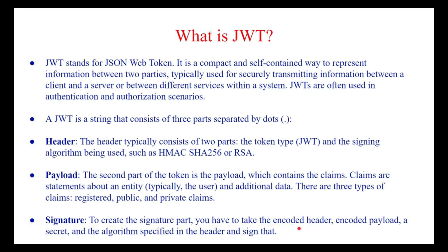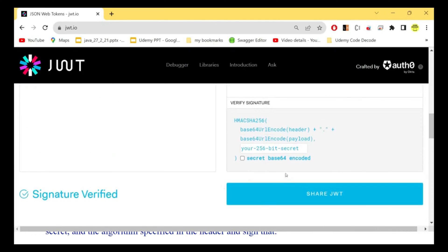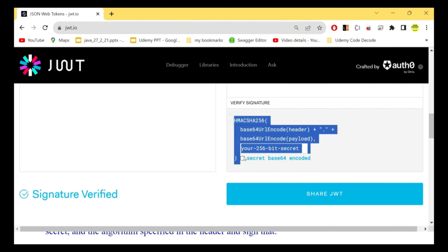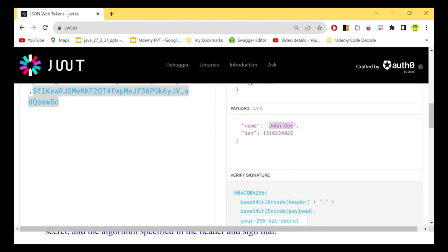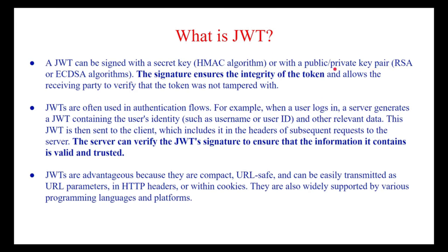There are three types of claims: registered, public, and private. The last part is the signature, which is created by taking the Base64-encoded header, the Base64-encoded payload, and a secret, then signing them using the algorithm defined in the header — for example HS256. This signature ensures the integrity of your JWT token and allows you to verify the token was not tampered with. JWTs are signed with a secret key or with a public/private key RS algorithm.